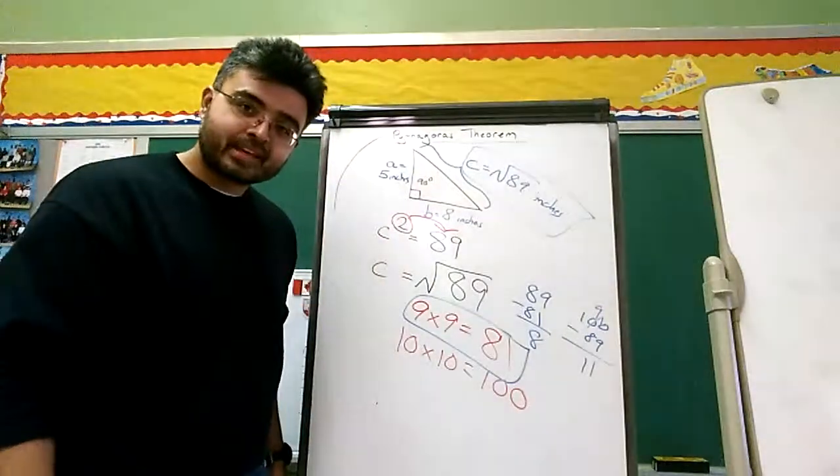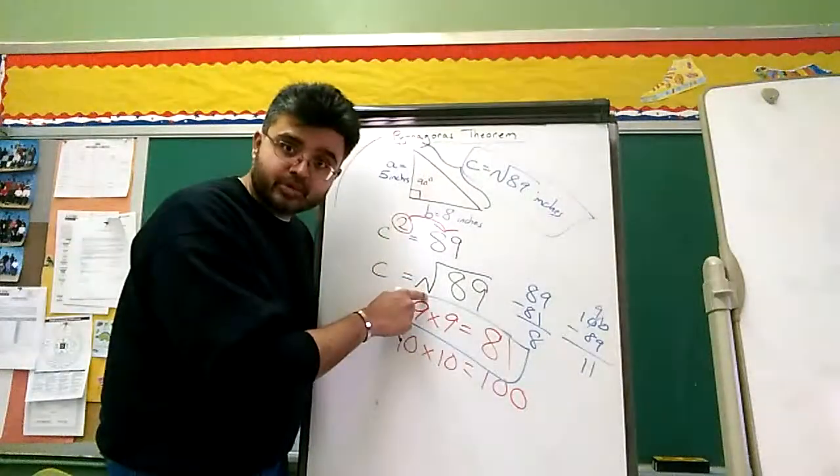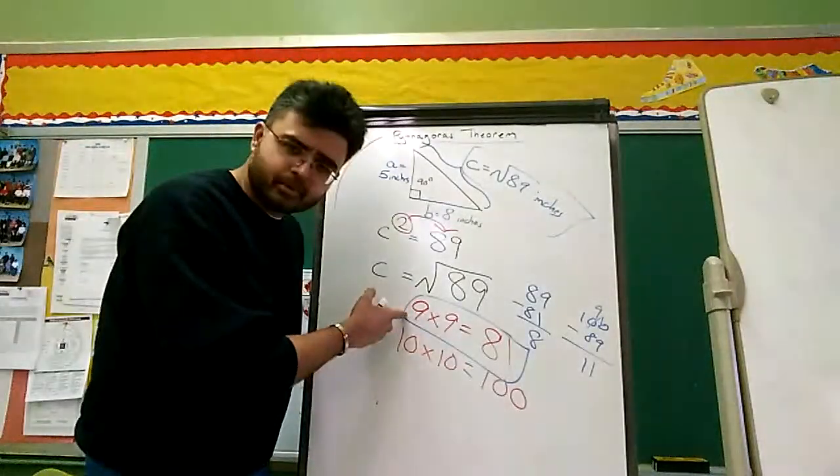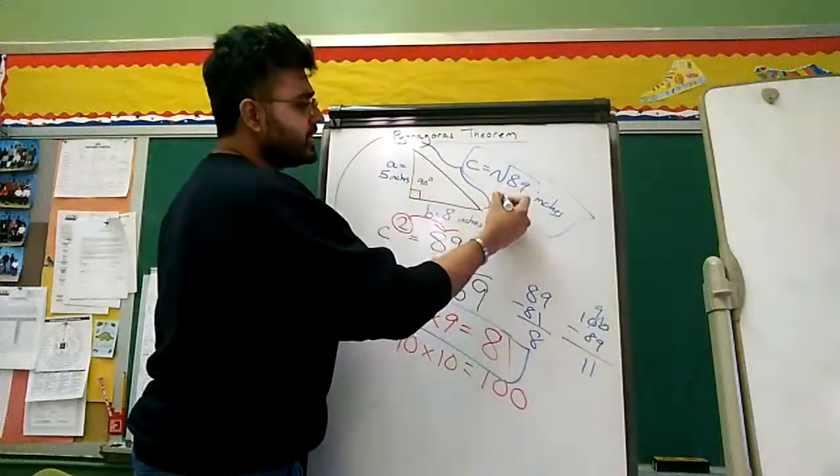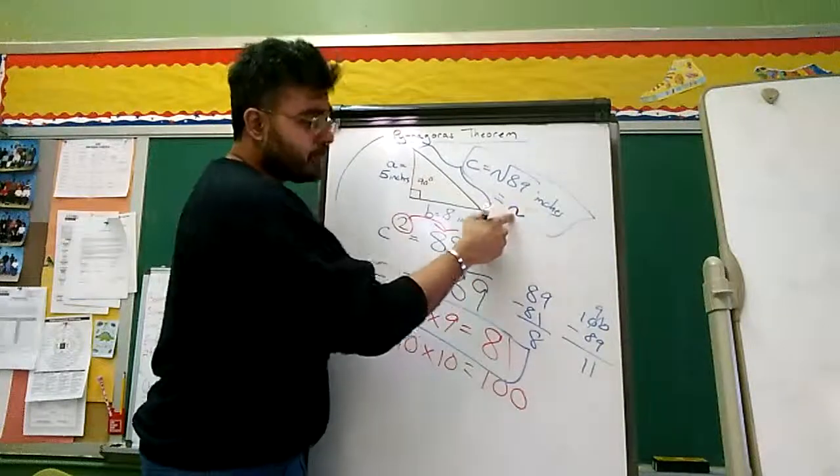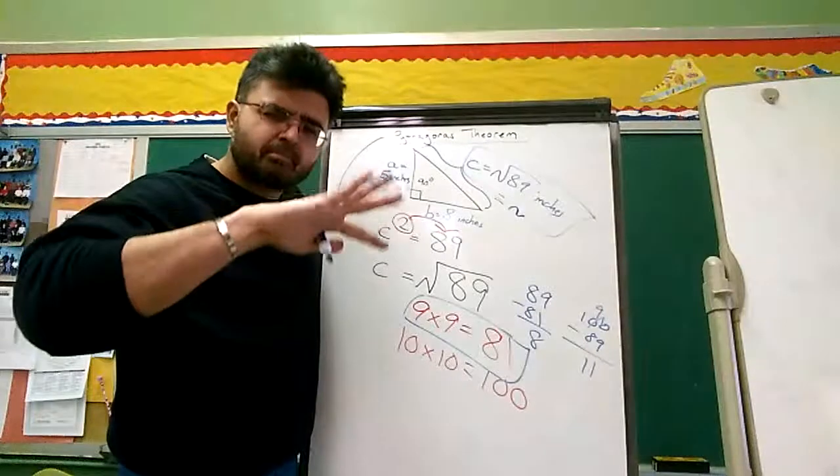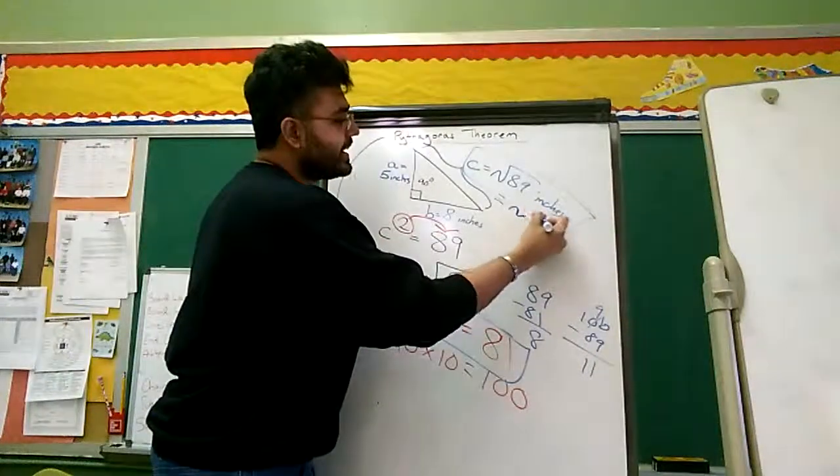So, the square root of 89, if you round it to the nearest square number, the square root of 89 is about—remember the sign tilde? Tilde means about, not exactly—about 9 inches.